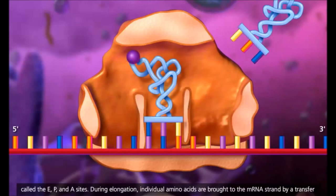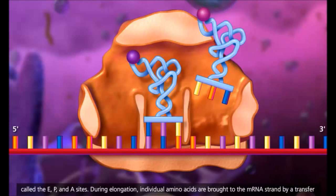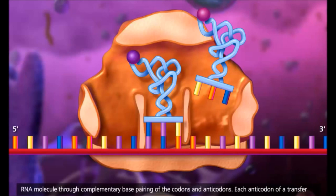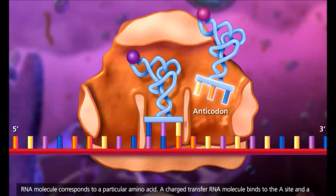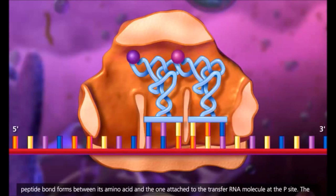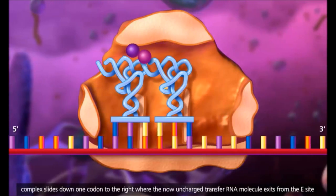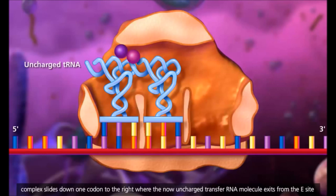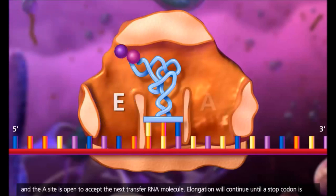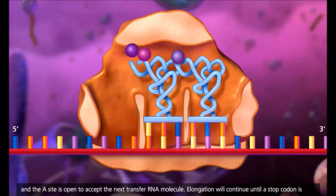During elongation, individual amino acids are brought to the messenger RNA strand by a transfer RNA molecule through complementary base pairing of the codons and anticodons. Each anticodon of a transfer RNA molecule corresponds to a particular amino acid. A charged transfer RNA molecule binds to the A site and a peptide bond forms between its amino acid and the one attached to the transfer RNA molecule at the P site. The complex slides down one codon to the right where the now uncharged transfer RNA molecule exits from the E site and the A site is open to accept the next transfer RNA molecule.